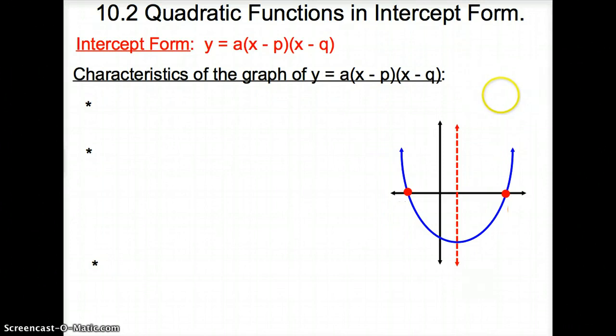Hey there, hello there, welcome to section 10.2, quadratic function in intercept form. Now what is intercept form? Intercept form is y equals a times a quantity x minus p times a quantity x minus q.